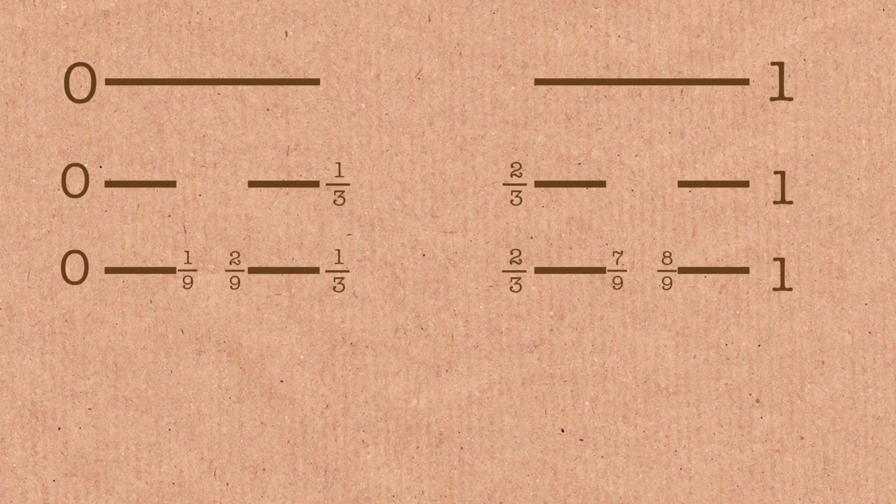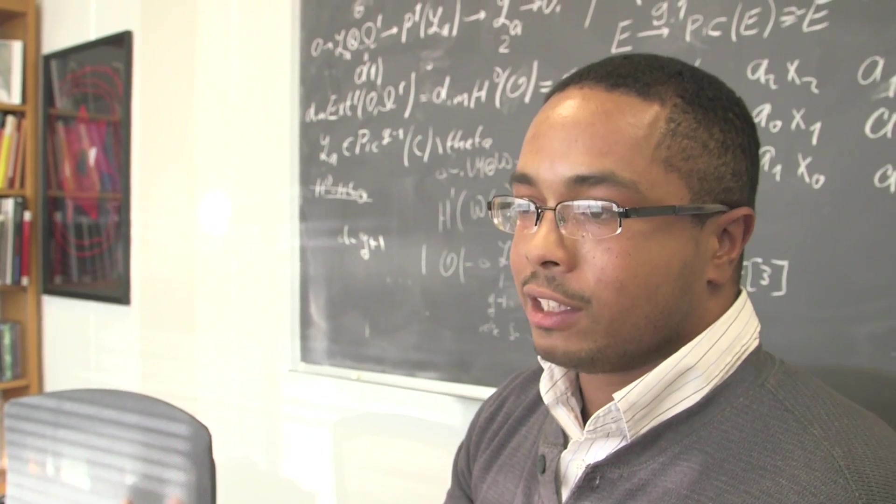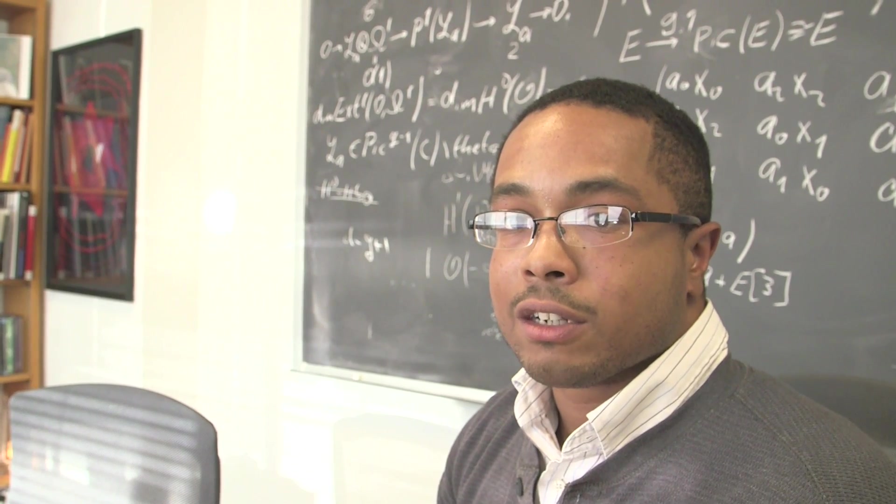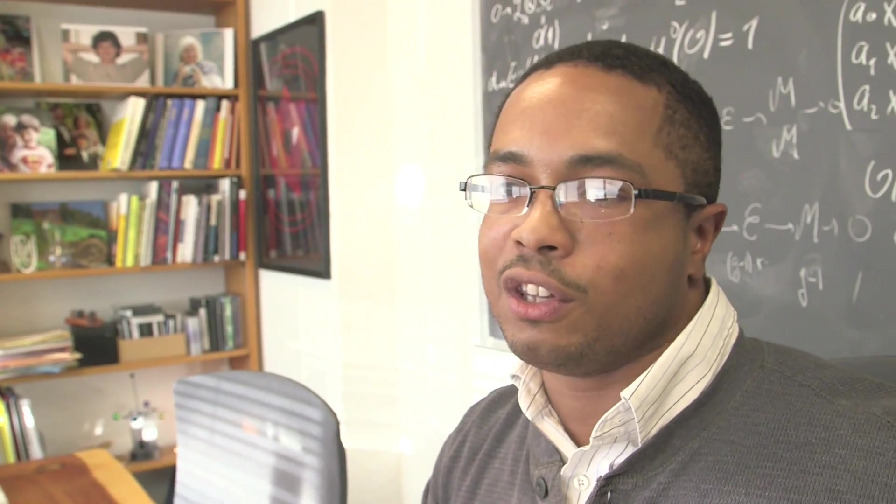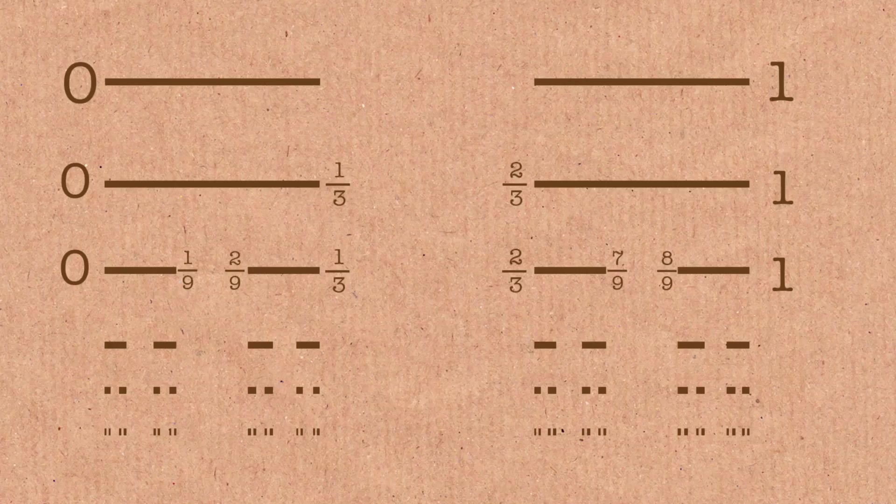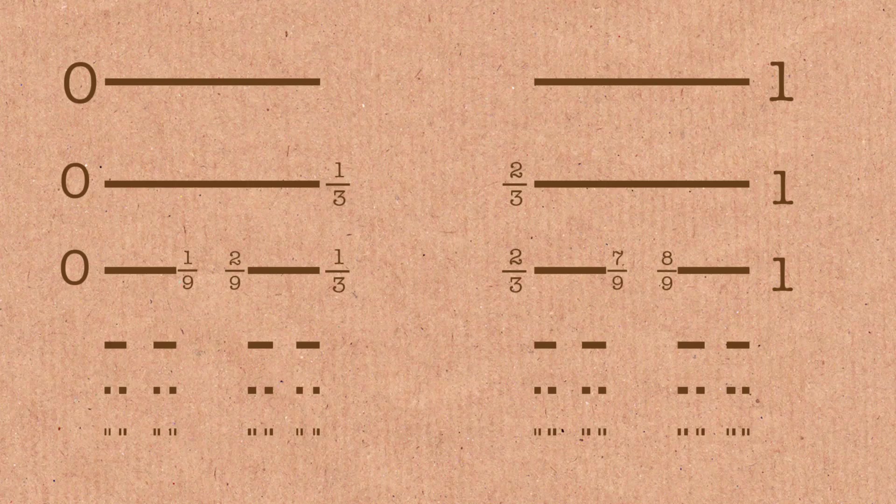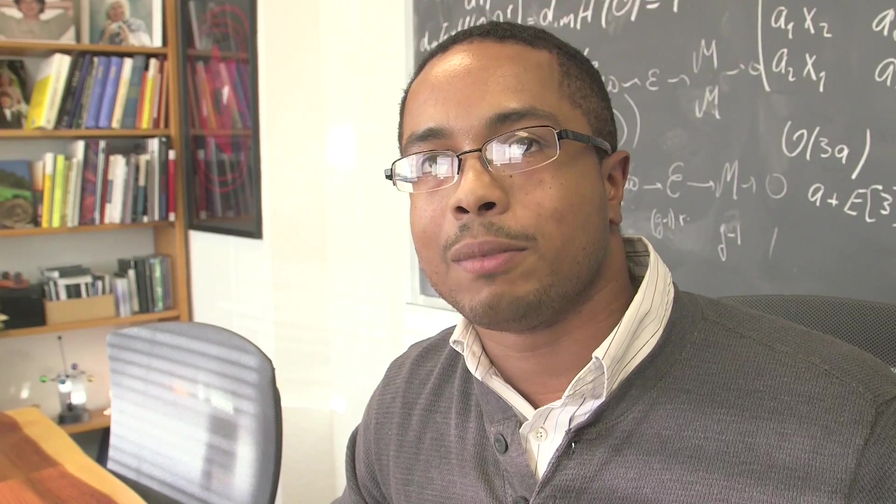You do it again and you do it infinitely many times. And the last and the limit set that you end up with is called the Cantor middle third set. But you never get there. How would you ever get there? Well, you approximate it, basically. The thing that if you get close enough or you take an arbitrarily large step in our progression, that'll be the closest set to it. That'll be the limit.